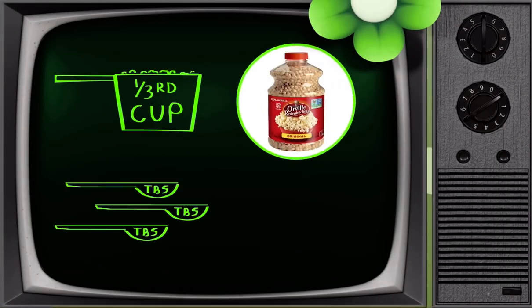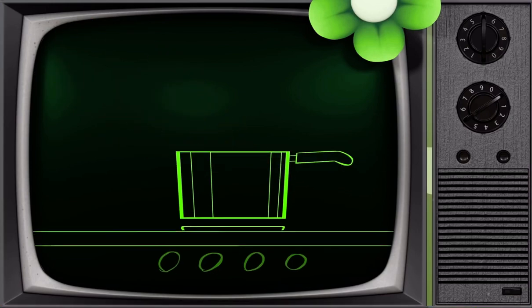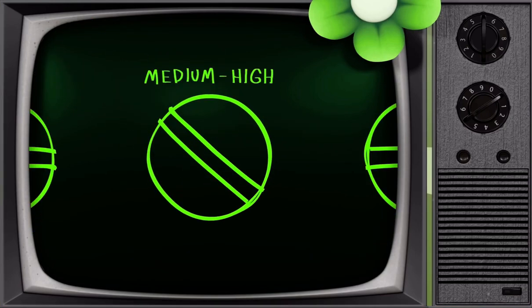First, add a third of a cup of corn and four tablespoons of vegetable oil to a large deep covered pan, also known as a pot if you're not a complete idiot. Cover it and put it on medium-high heat.